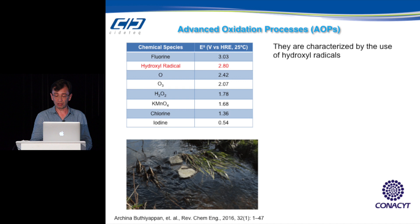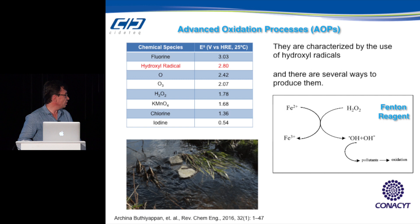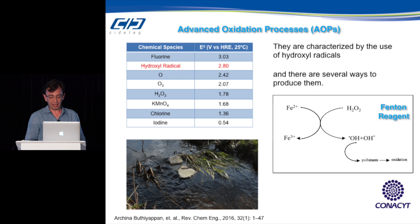There are many ways to generate the hydroxyl radical, and one of them is the Fenton reagent. The Fenton reagent is the combination of hydrogen peroxide and iron two species in aqueous medium. As you can see in that image, you generate the hydroxyl radical and iron three species, and the hydroxyl radical goes ahead and oxidizes any pollutant it finds in water.